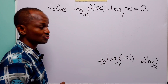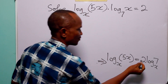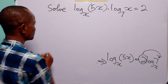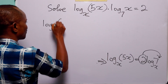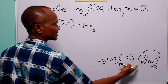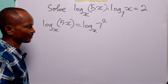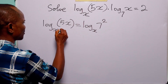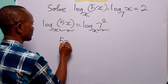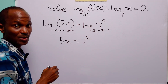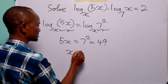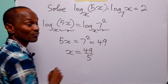Next, we apply the power rule to the right hand side — we take this multiplier to become an exponent of 7. So log base x of 5x equals log base x of 7 squared. Since both sides have log base x, we get 5x equals 7 squared, which is 49, and therefore x equals 49 over 5.